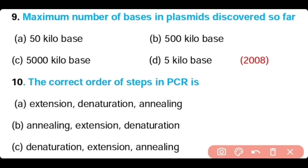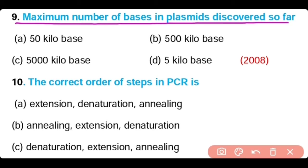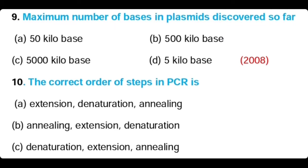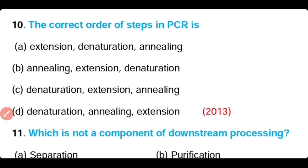Question 9: Maximum number of bases in the plasmid discovered so far are — 50 kilobase, 500 kilobase, 5000 kilobase, or 5 kilobase? The correct answer is option B. 500 kilobases are the maximum discovered so far in plasmids.